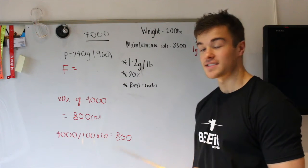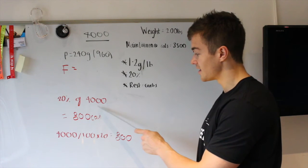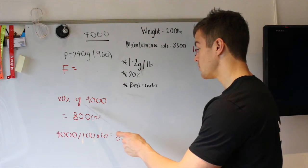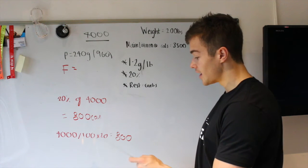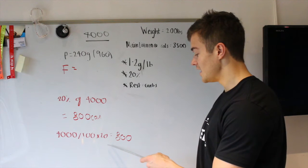So, next up, we're going to work out fats. I'm on 4,000 calories a day. And I want 20% of my overall calories to come from my fat intake. So, what I'm going to do is I'm going to work out 20% of 4,000. So, 4,000 divided by 100 to get 1% times 20 equals 20% equals 800.